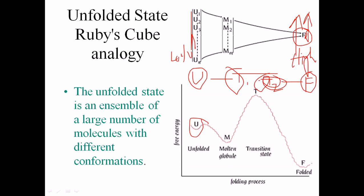Looking at the free energy landscape, the folded state has the least free energy, which is why it is most favored. The unfolded state has moderately high free energy, while the transition state has the highest free energy. We must pass through this peak of the transient state to finally achieve the folded state, which is why most of the time we observe unfolded and folded protein, with very little transient state present.